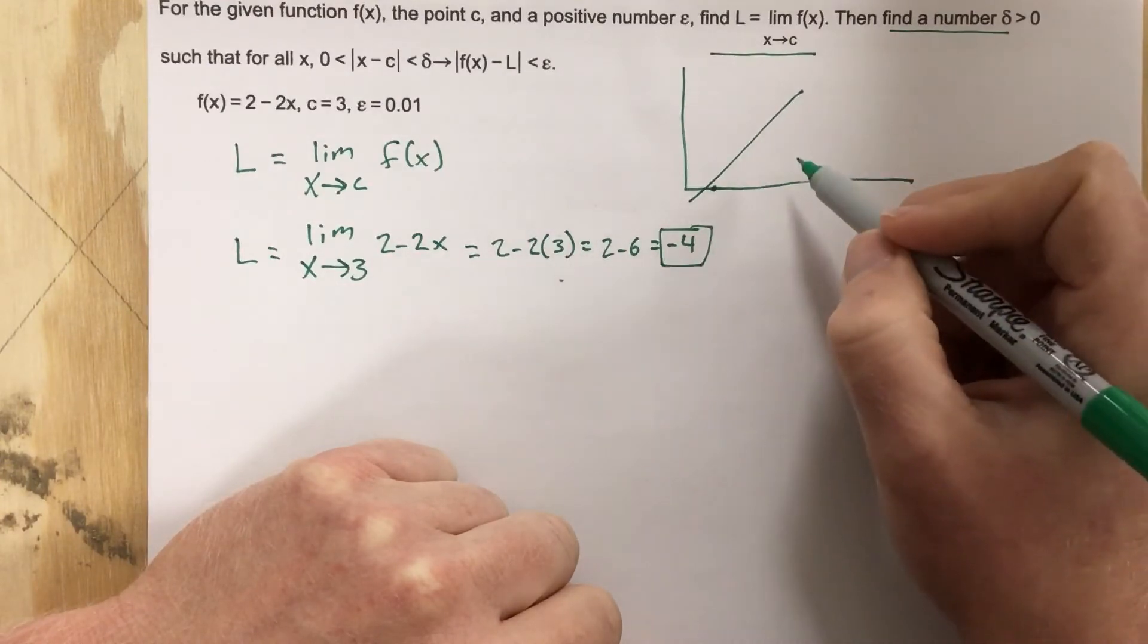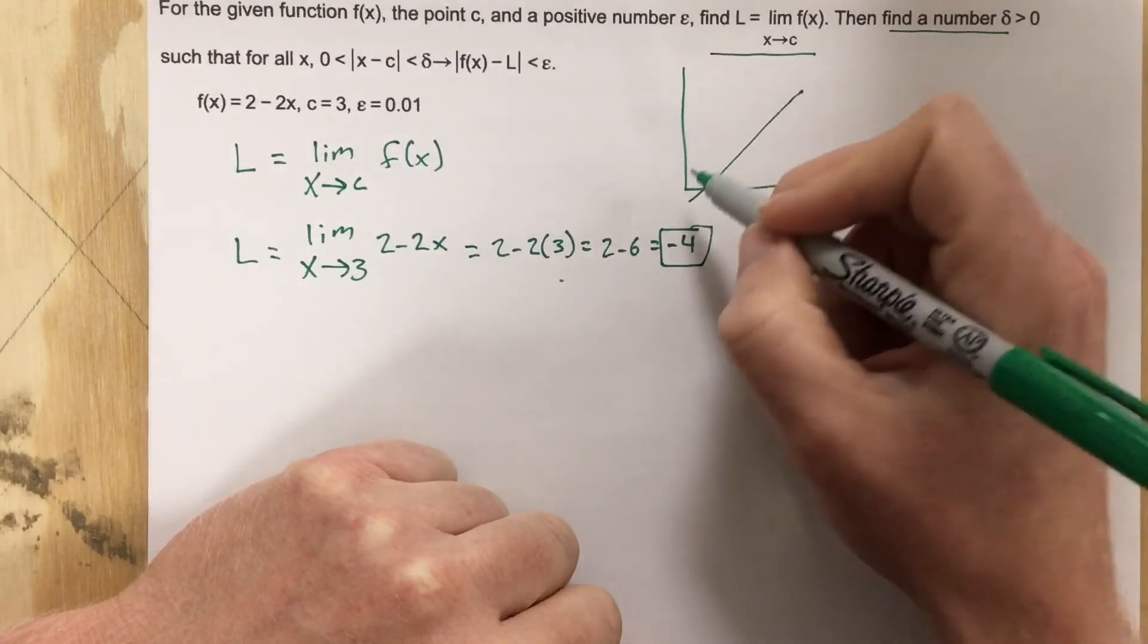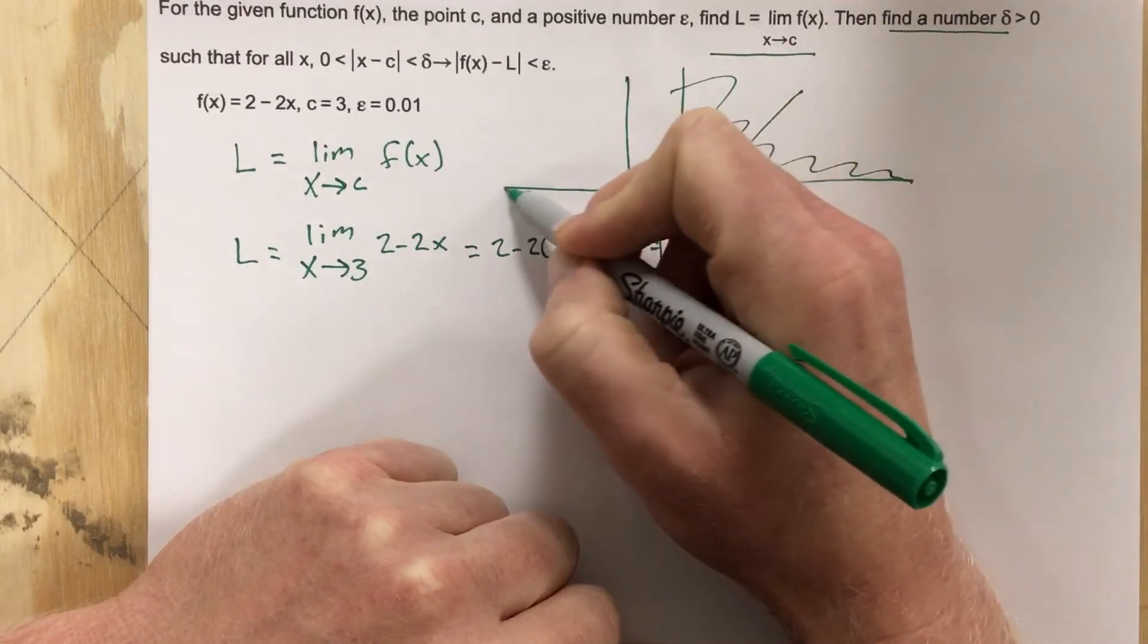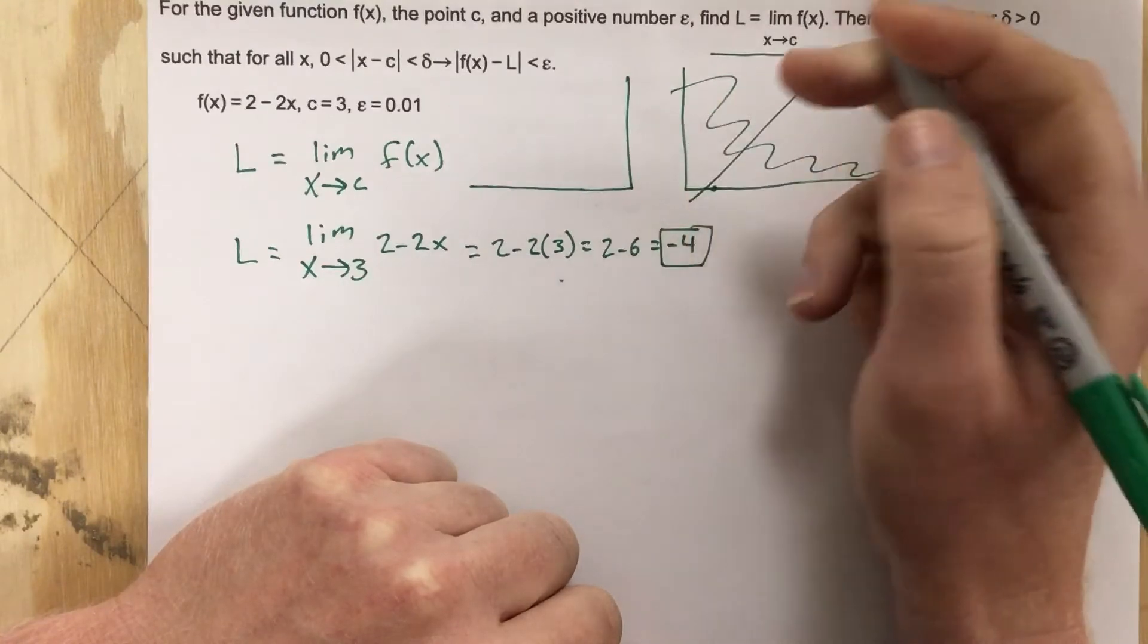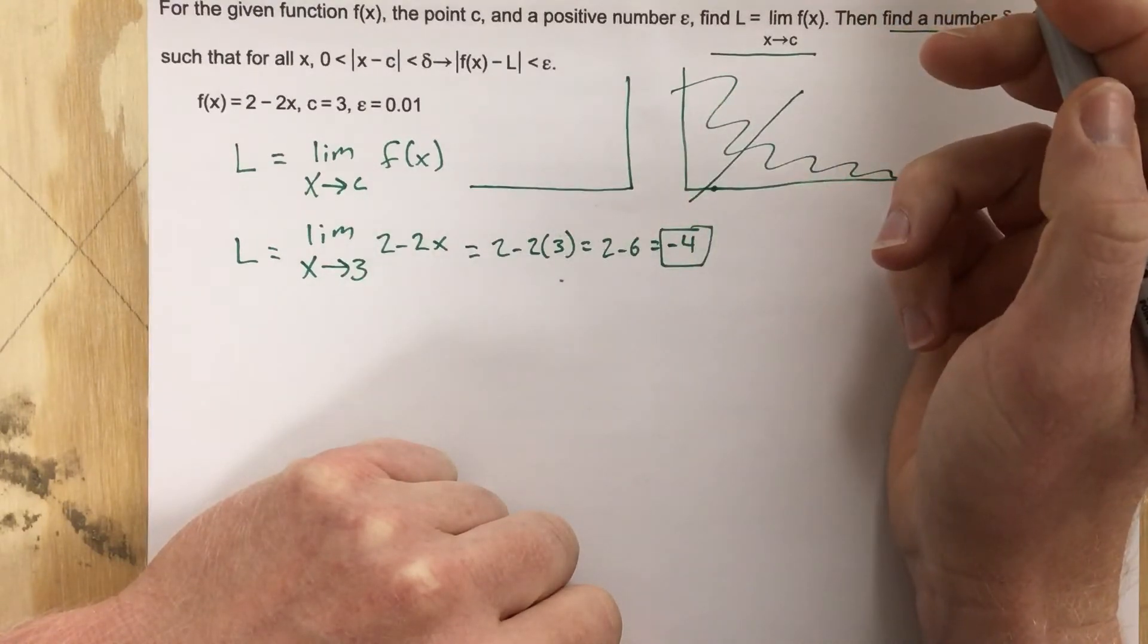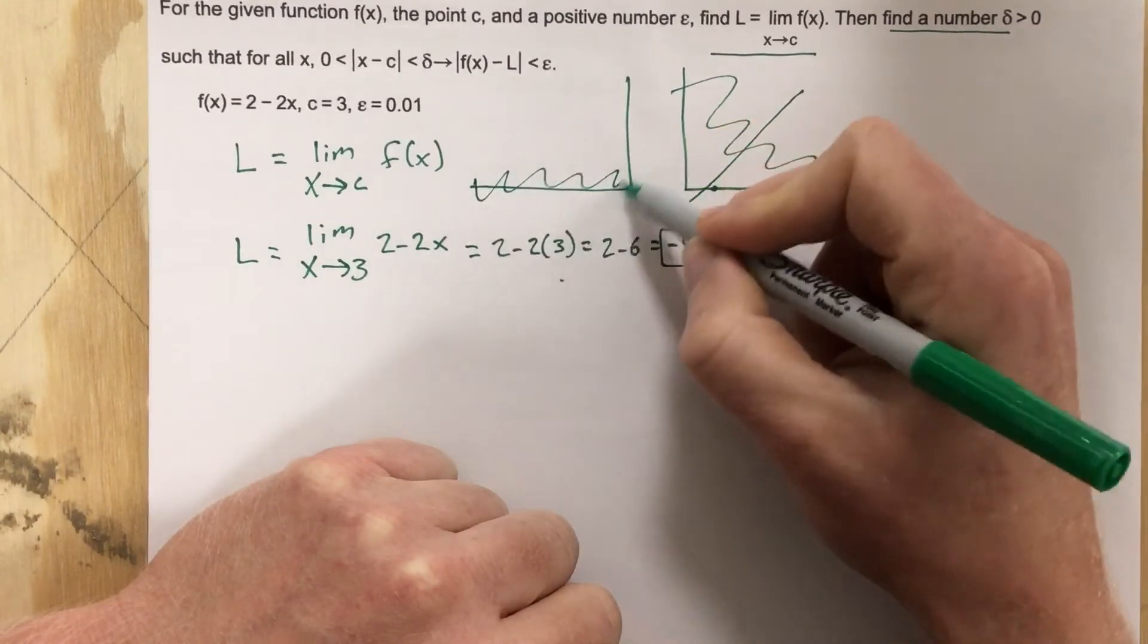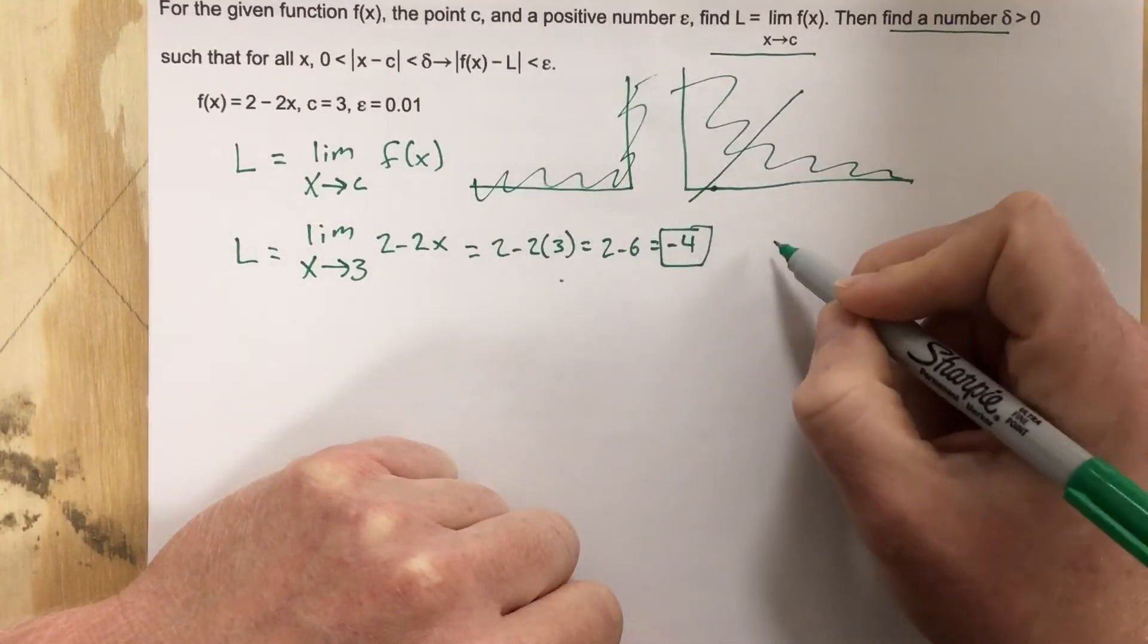And maybe we'll draw this. Let's actually scratch this out, and let's draw this in the other quadrant because we know our limit is negative 4. Oh, my bad. Both of those. Let's go ahead and draw it down here.